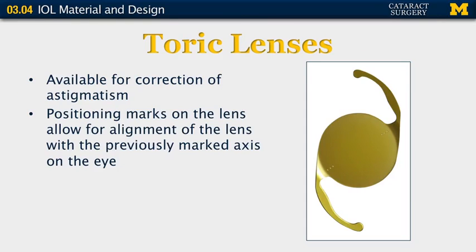Finally, let me speak about toric lenses. These have also been relatively recently introduced, and they are now available for correction of astigmatism. There are positioning marks on the edge of the lens implant that allow you to line up the lens with previously marked axis on the surface of the eye. The lenses otherwise behave in a similar fashion to the other AcrySof lenses for insertion through smaller incisions.